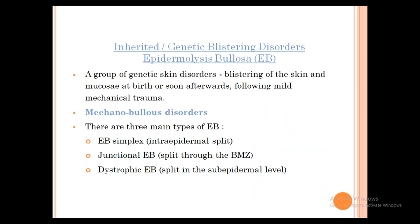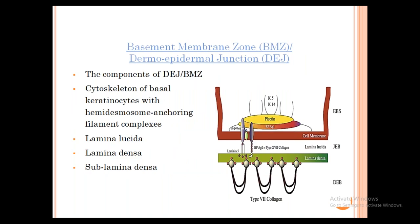Inherited genetic blistering disorders — we start with a group known as Epidermolysis Bullosa. The important point is that bullae are formed in a child due to mild mechanical trauma. There are three types depending on the level of the bulla in the skin: Epidermolysis Bullosa Simplex (in the epidermis), Junctionalis (at the dermal-epidermal junction), and Dystrophic Epidermolysis Bullosa (sub-epidermal split).